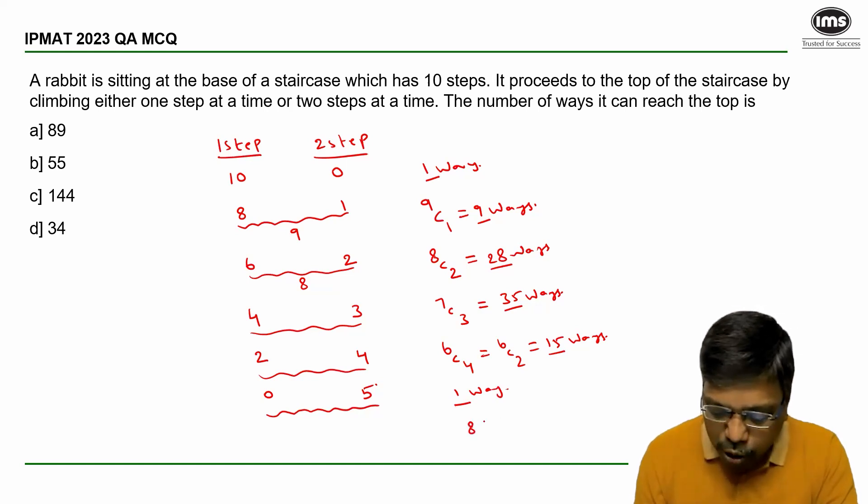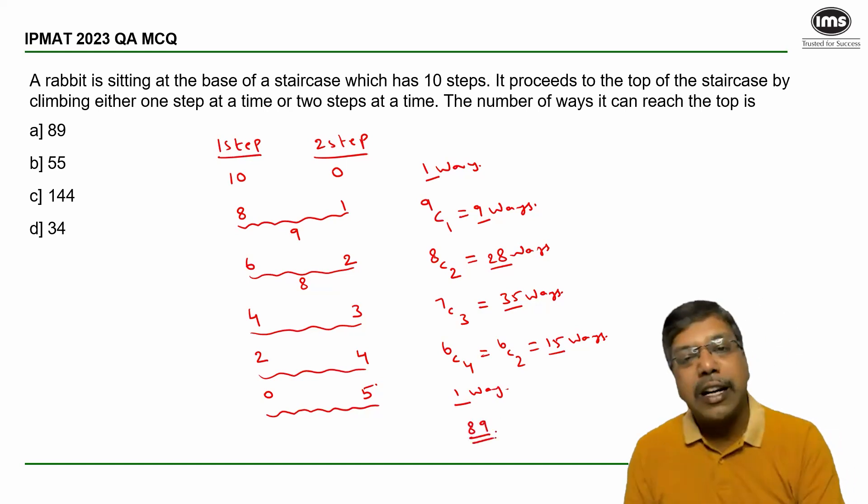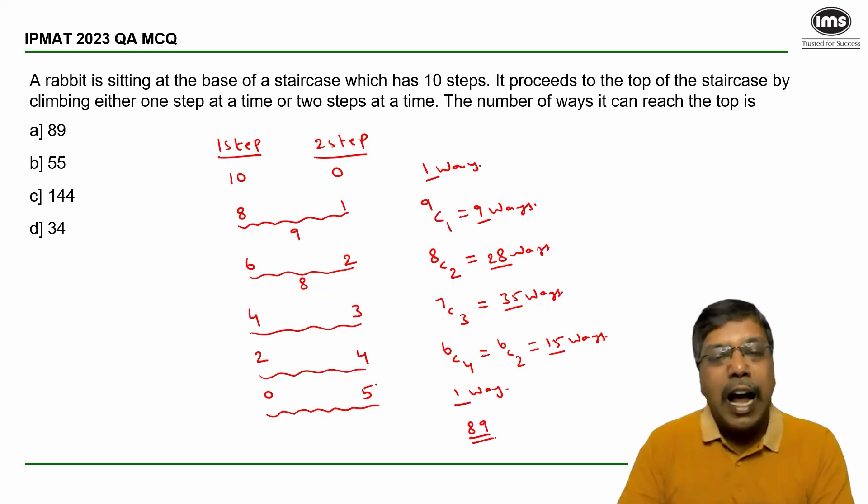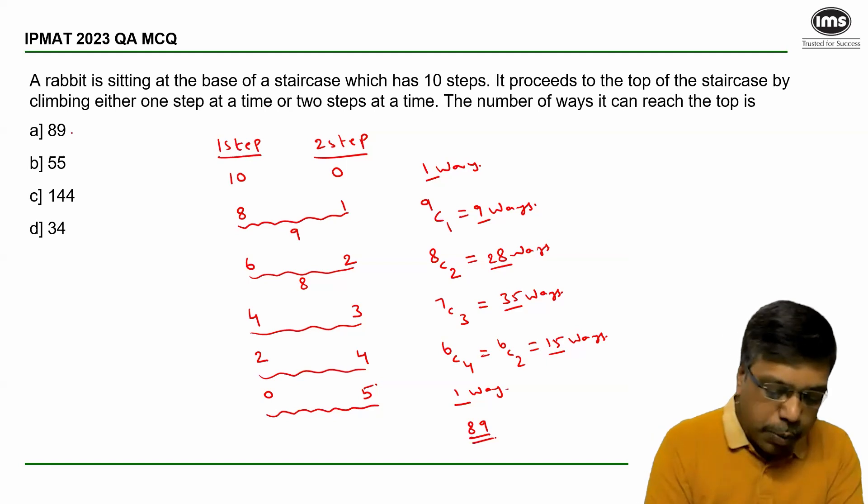Hence, the total number of ways in which the rabbit can cover the 10 steps, either in single step jumps or two step jumps, is equal to 89. Answer option A.